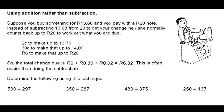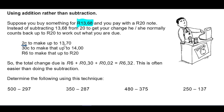Now let's look at how shopkeepers do subtraction — they don't actually subtract, they add back. Suppose you buy something for R13.68 and pay with a R20 note. From R13.68, add 2 cents to reach R13.70, then 30 cents to reach R14.00, then R6 more to reach R20. The total change is R6.32.